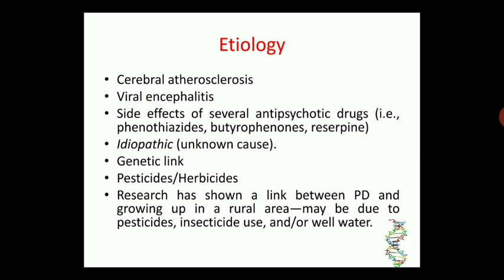There might also be a cause due to pesticides and herbicides. Nowadays, the use of pesticides is increased in pest control. A person regularly in contact with such pesticides may develop Parkinsonian symptoms. Certain research has shown a link between Parkinson's disease and growing up in a rural area, specifically due to pesticides, insecticides, and the use of well water — although this is not fully confirmed.